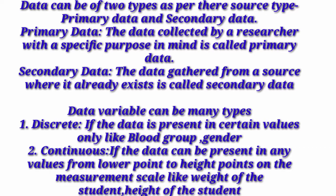Data can be of two types as per their source: primary data and secondary data. Primary data is the data collected by a researcher with a specific purpose in mind — an individual can collect this themselves. Secondary data is data gathered from other resources; for example, the population of India, Gujarat, or Delhi cannot be counted by yourself, so you collect it from other resources — this is known as secondary data.